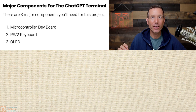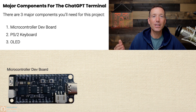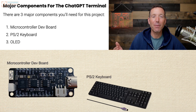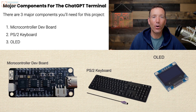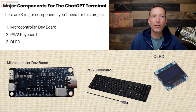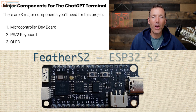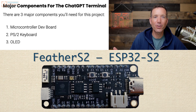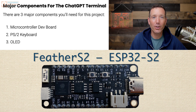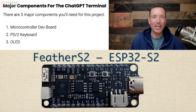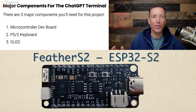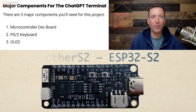Did you want fries with that lame excuse? Now, there are three major components that you're going to need to build this project: first is a microcontroller development board, then you're going to need a PS2-style keyboard and an OLED display. The microcontroller development board I used for this project was the Feather S2 ESP32 by Unexpected Maker. The ESP32 is a Wi-Fi and Bluetooth-enabled microcontroller, and they have tons of different great development boards. You don't need this exact model to run this code — in fact, I think any ESP8266 would even work — but I've really grown to love the Unexpected Maker dev boards.